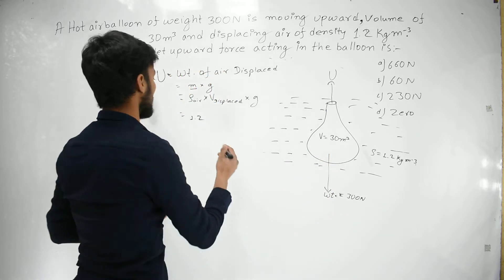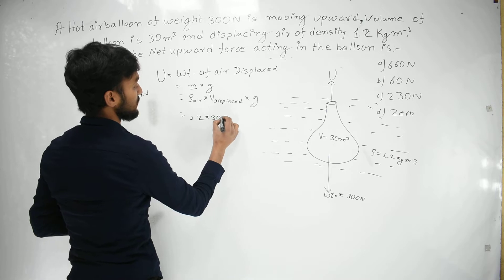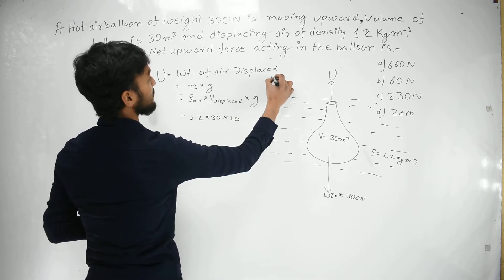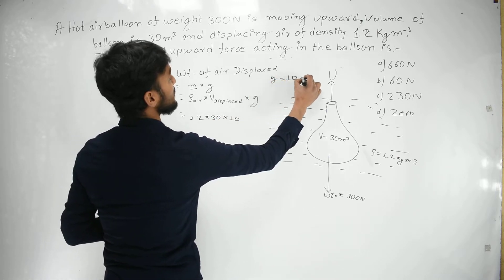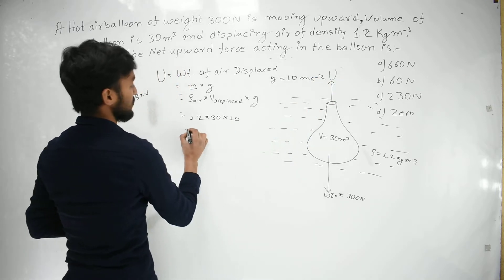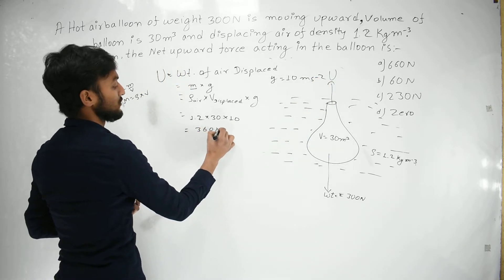g is 10 meters per second squared. This is 360 newtons.